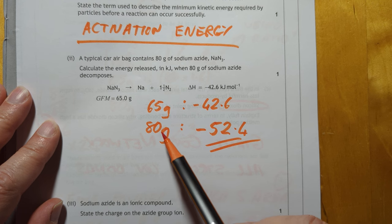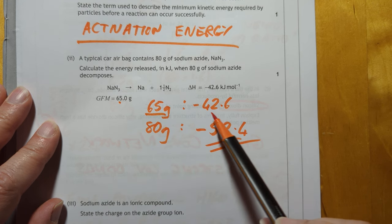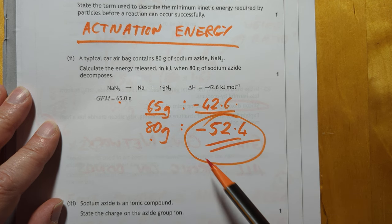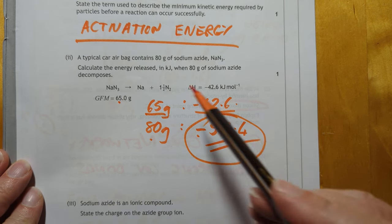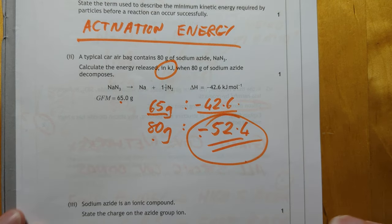That's just the definition time. This here, we've got 65 grams, which is the GFM, would give you that number of kilojoules. We have 80 grams. Therefore, that number of kilojoules. Don't forget the negative. As per usual, units in the question, don't put it in the answer.